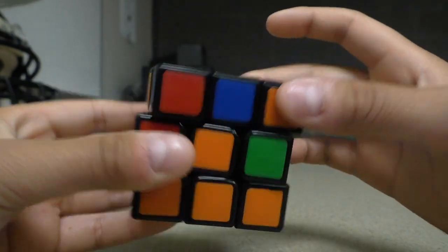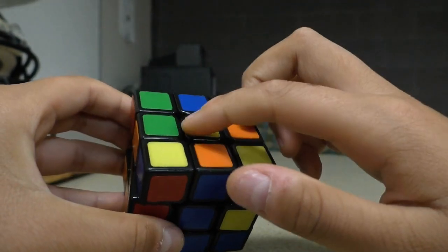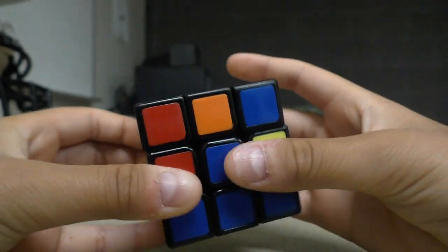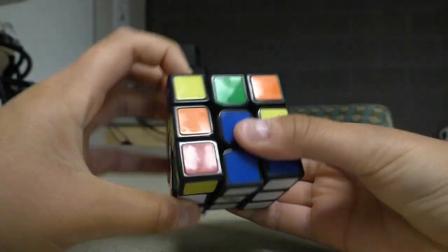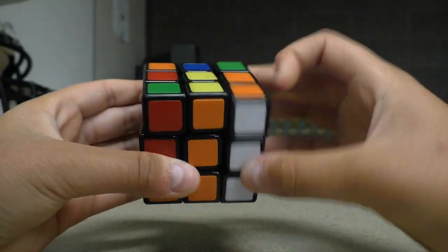Next thing you're going to do is you're going to solve the middle layers. Find a piece that is not yellow. This one is blue and orange. Since orange is left, we're going to turn it to the right, and then we're going to solve that pattern.